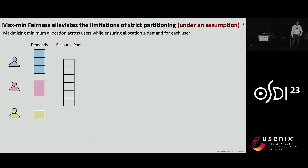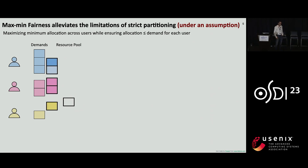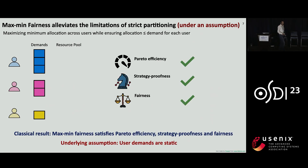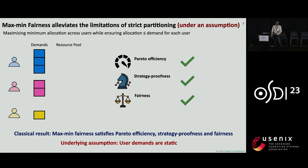Maximum fairness alleviates the limitations of strict partitioning by taking user demands into account while allocating resources. Users first get the minimum of their demand and their fair share, and the remaining resources can be used to satisfy any remaining demands. There's a classical result showing that maximum fairness satisfies all three key desirable properties, but only under the strong assumption that user demands are static.